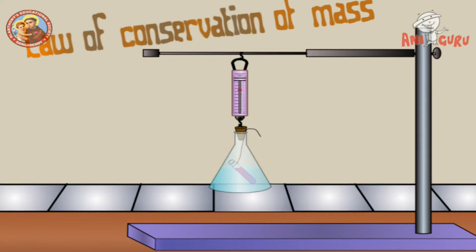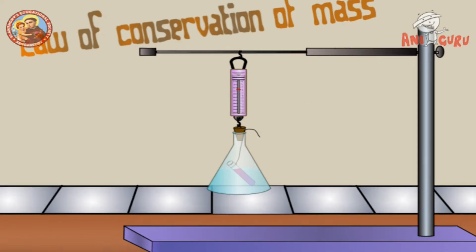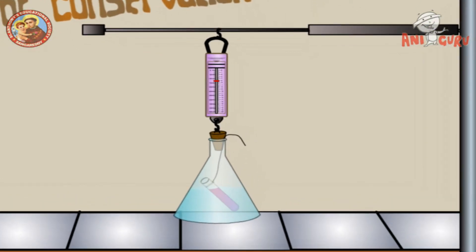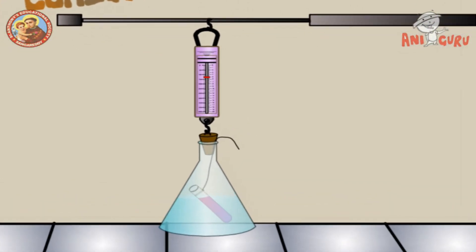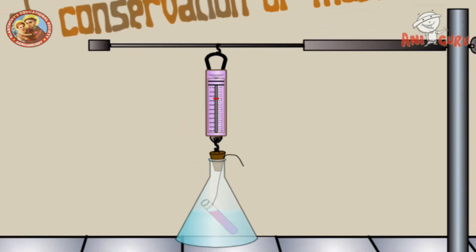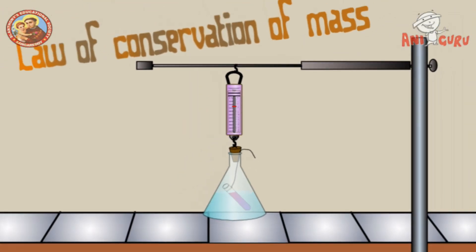Procedure: Prepare a solution of lead nitrate and potassium iodide. Take potassium iodide in a small test tube and hang the test tube in a conical flask containing lead nitrate solution, carefully without mixing the solutions. Close the flask with a cork. Weigh the flask carefully using a spring balance.